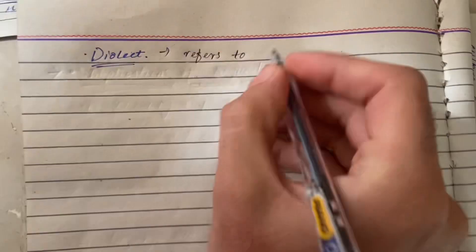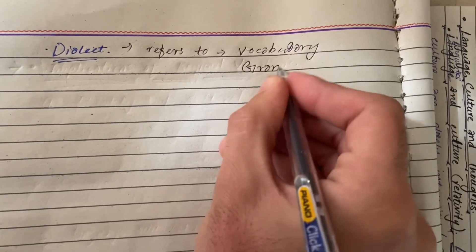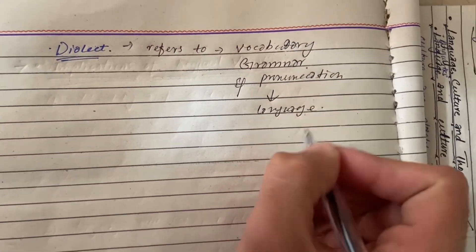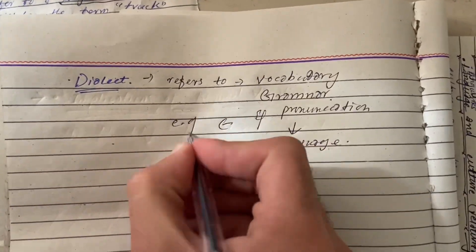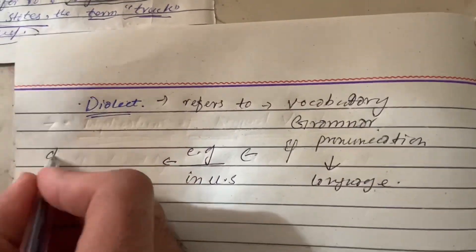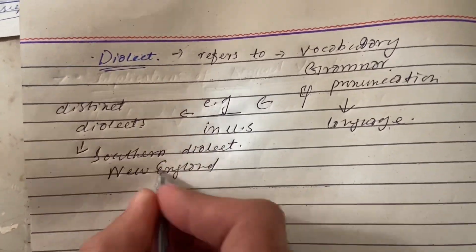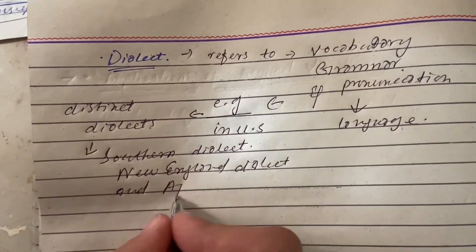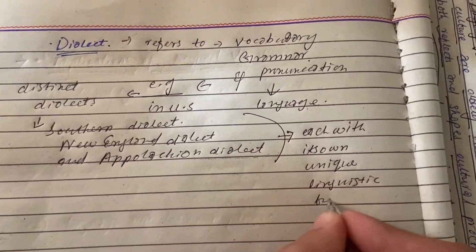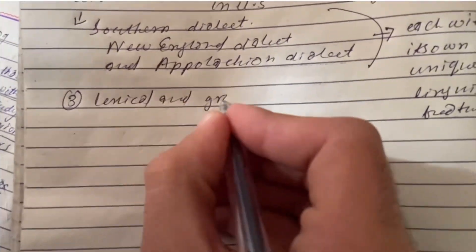Secondly, dialect refers to variation in vocabulary, grammar, and pronunciation within a language. For instance, in the United States there are distinct dialects such as the Southern dialect, the New England dialect, and the Appalachian dialect, each with its own unique linguistic features.